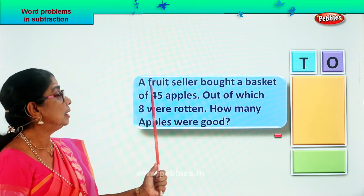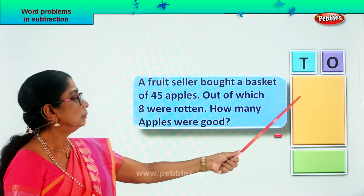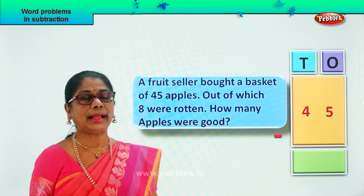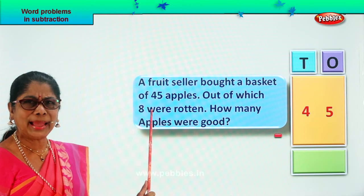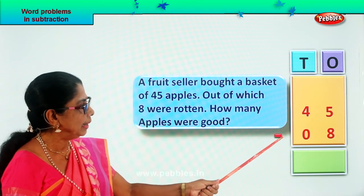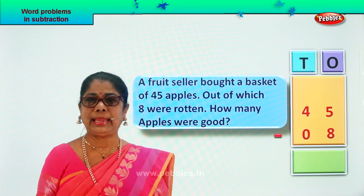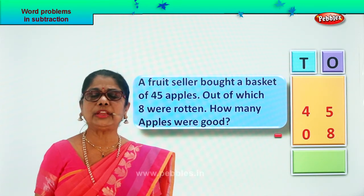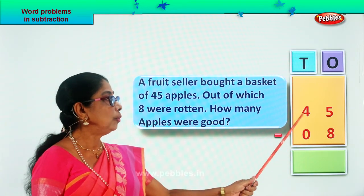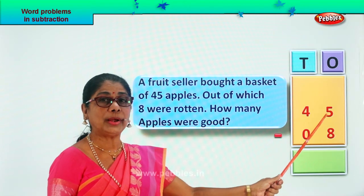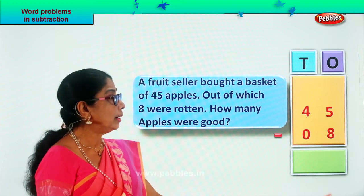You are supposed to find out how many apples were good. Number of apples the fruit seller bought: 45 apples. Number of apples rotten in the basket — gone bad in the basket — minus 8. So 45 minus 8 will give you the answer of how many apples were good. We have arranged 4 tens, 5 ones minus 0 tens, 8 ones. Now let's do the work.